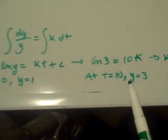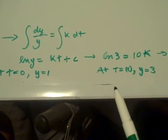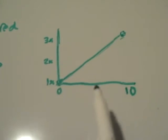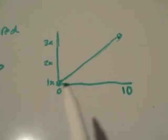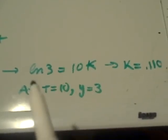So as you see here, it's gone from y equals 1 to y equals 3, and it's gone from t equals 0 to t equals 10. I've tried to illustrate that in this graph here. At 1, it's 1 times. You go up to 10. Hey, it's 3 times. The bacteria is growing.